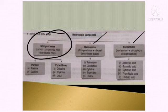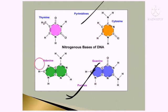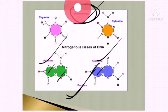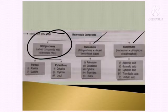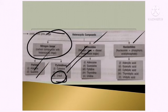Nitrogenous bases can be of two types: purines and pyrimidines. Purines include adenine and guanine, which have two rings. Pyrimidines include cytosine, thymine, and uracil, which have one ring. In DNA, thymine is present; in RNA, uracil replaces thymine. So uracil is also a pyrimidine.